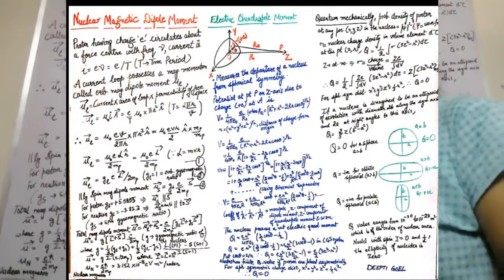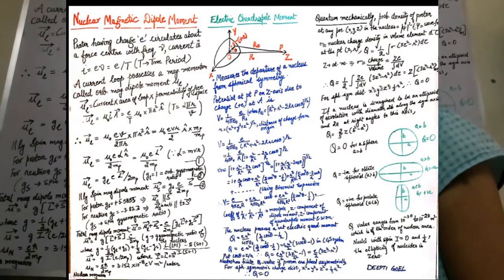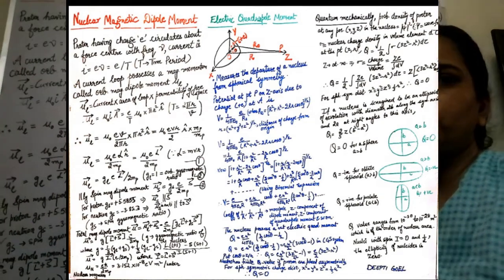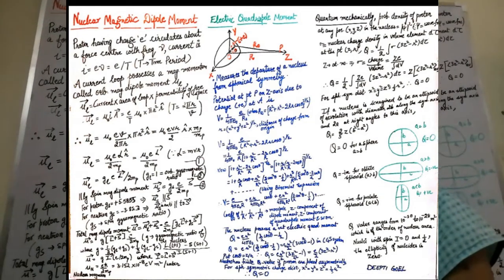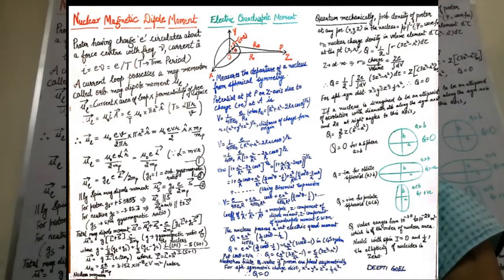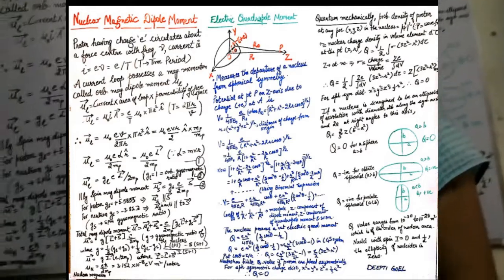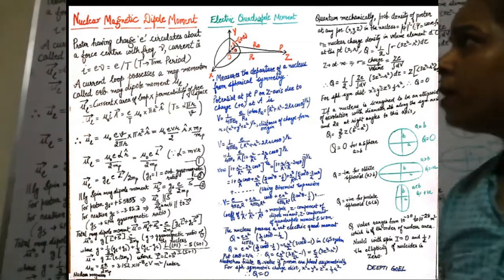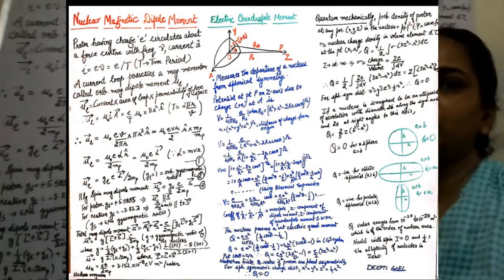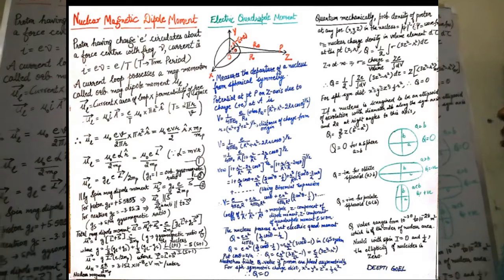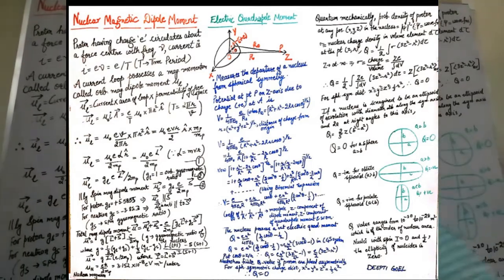The nuclear magneton is the magnitude of the nuclear magnetic dipole moment. The angular momentum is contributed only due to the unpaired nucleon (proton or neutron) present inside the nucleus. This concludes our discussion of the nuclear magnetic dipole moment.